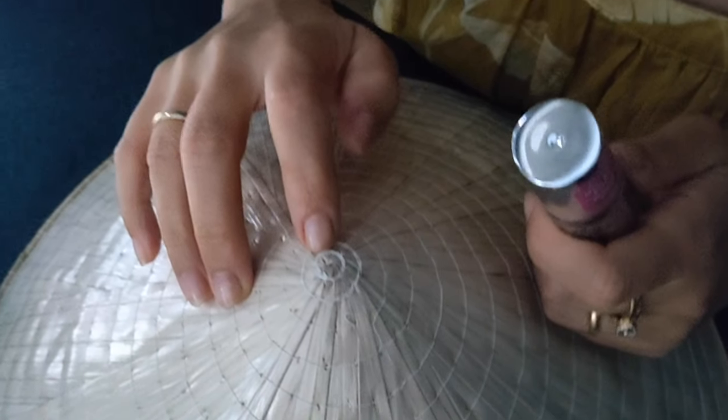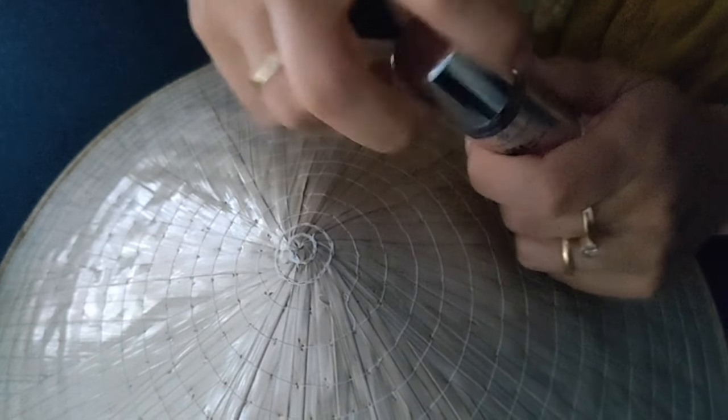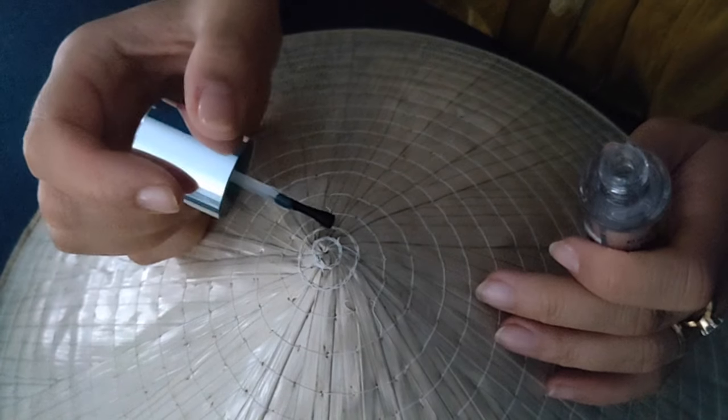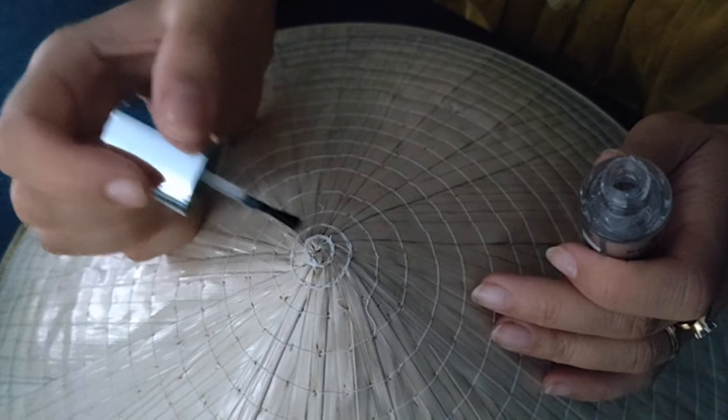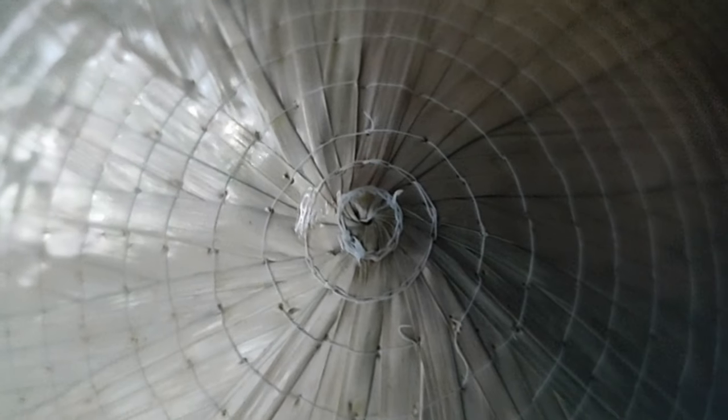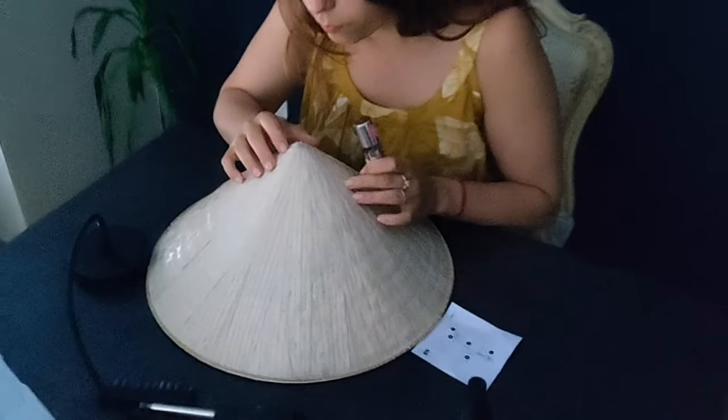So I'm applying here transparent nail polish so it gets a little bit stronger and more fixed once I start destroying the poor hat. A good amount, don't be shy. Let it dry and then make a hole.